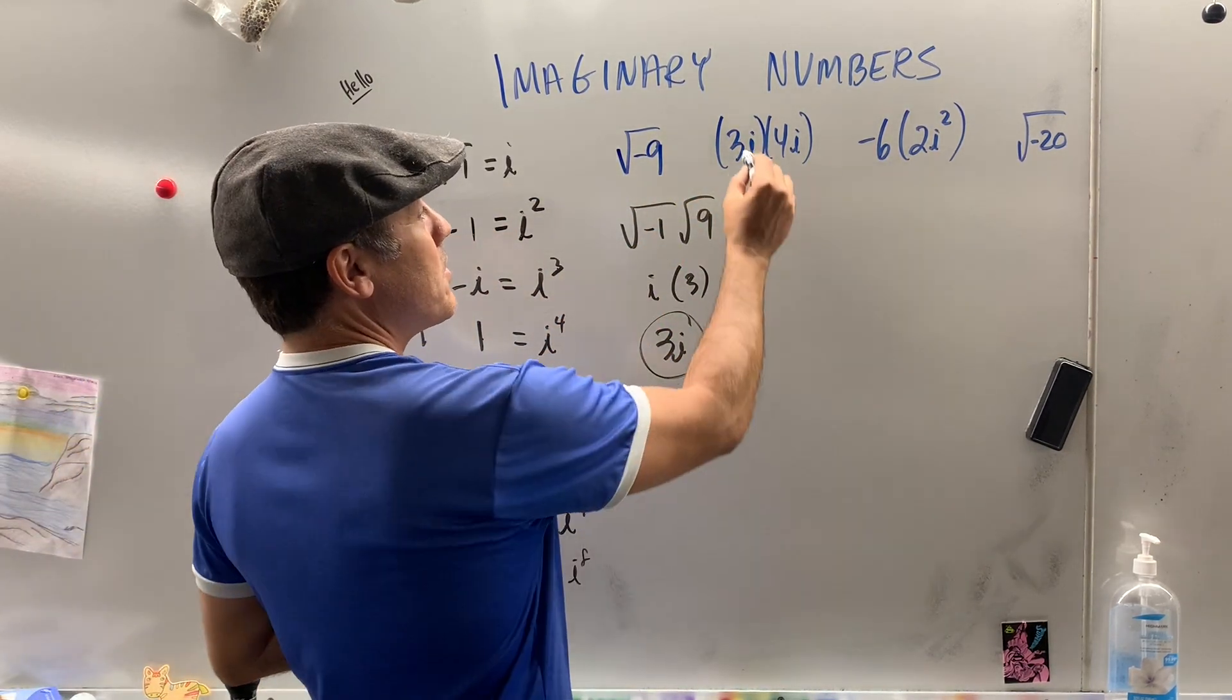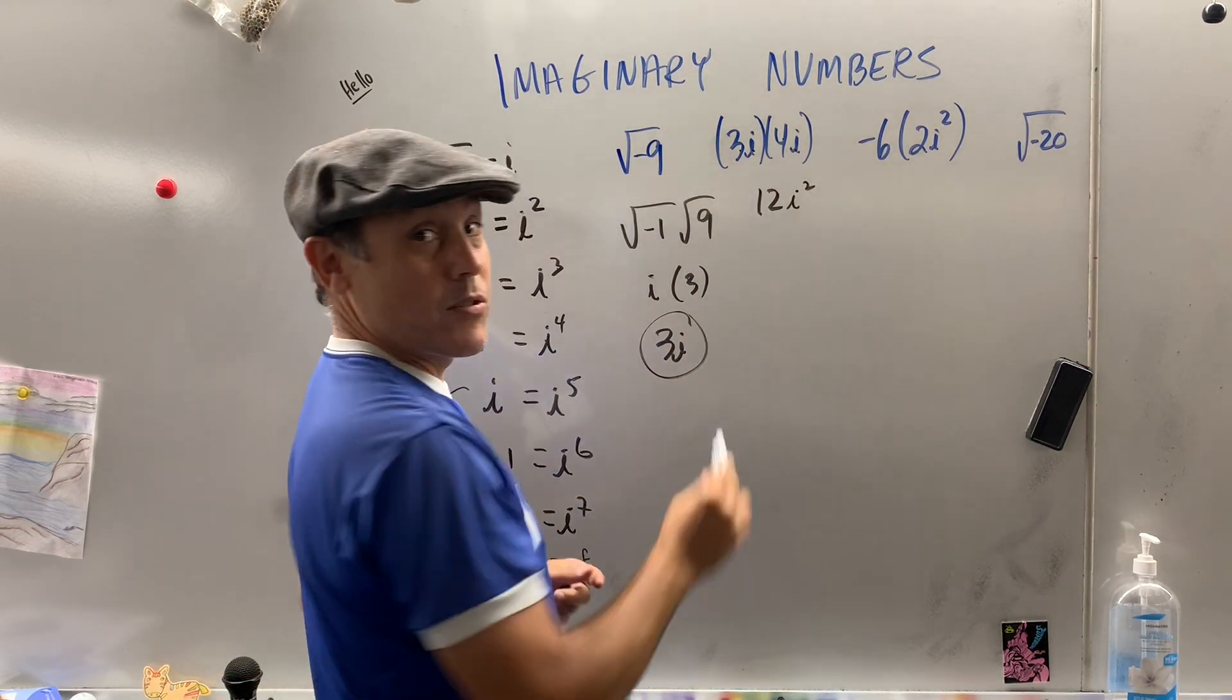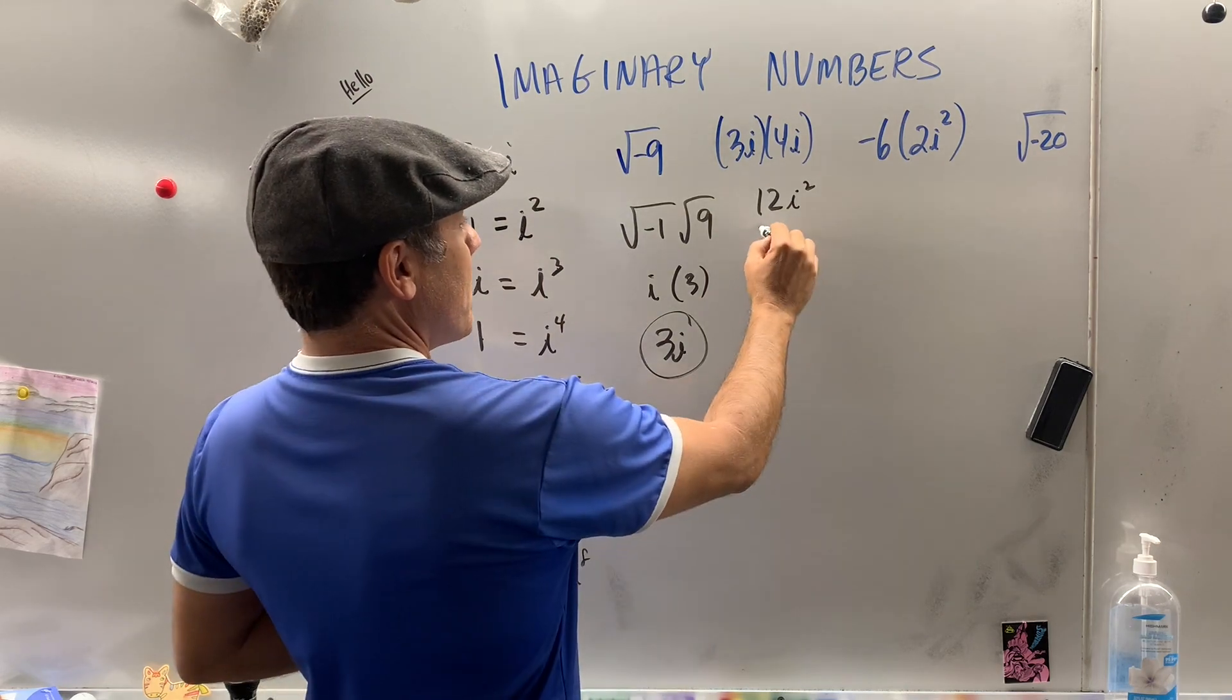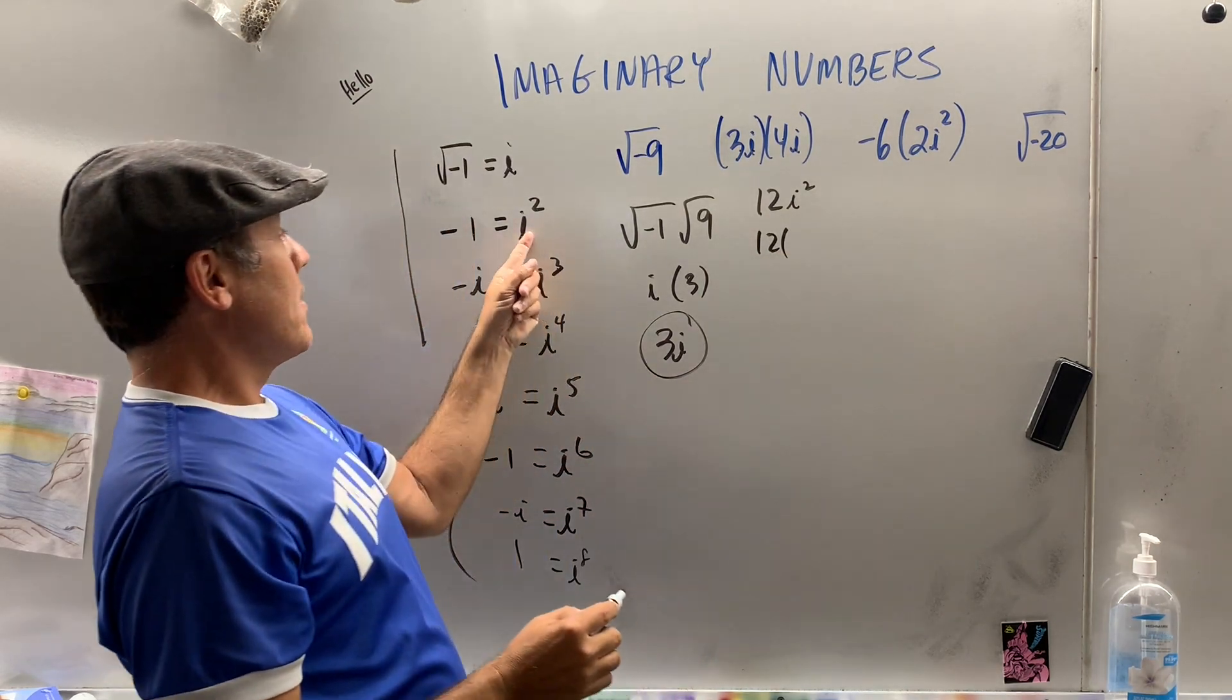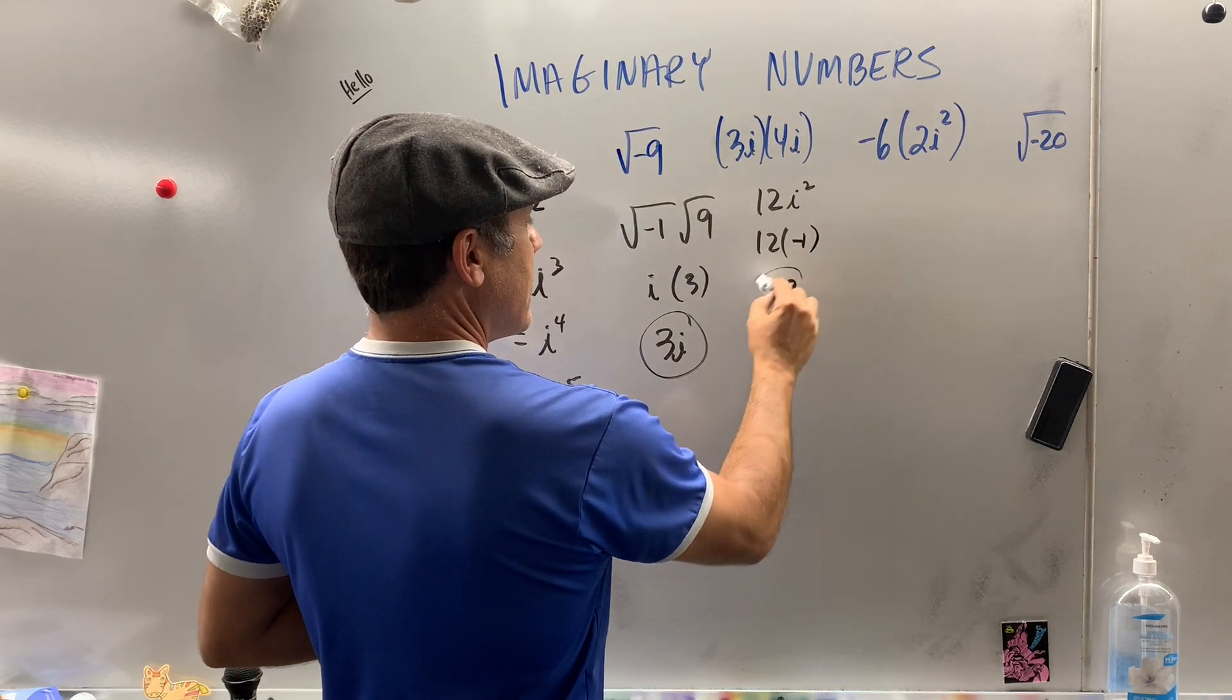How about the next one? Well, what you could do is multiply 3 times 4 is 12. And what's i times i? i². So 12 times - what is i² equal to? Negative 1. And we get negative 12.